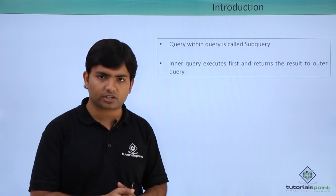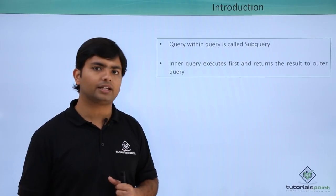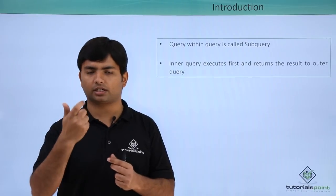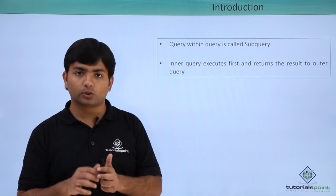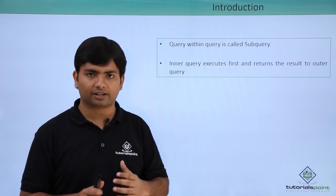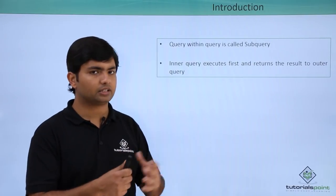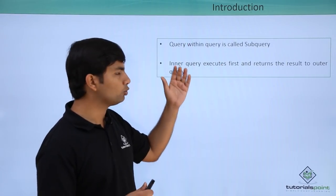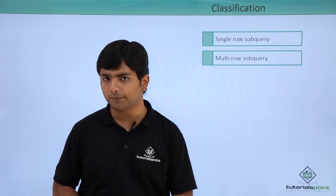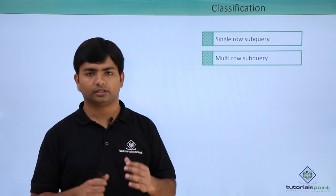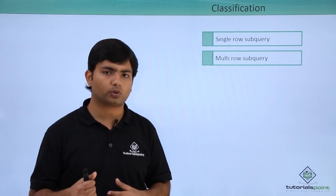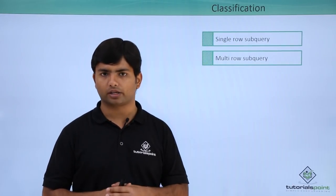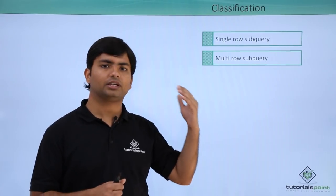For example, if I want to find all employees earning more than Lex, the inner query will find Lex's salary and return it to the outer query, which will then compare that salary with others. Any employee earning more than that amount will appear in the output. Based on the number of rows returned by a sub-query, we can classify it into two types: single row sub-query and multi-row sub-query. If the inner query returns just a single record, it's a single row sub-query; if it returns more than one, it's a multi-row sub-query. We must choose the operator accordingly.